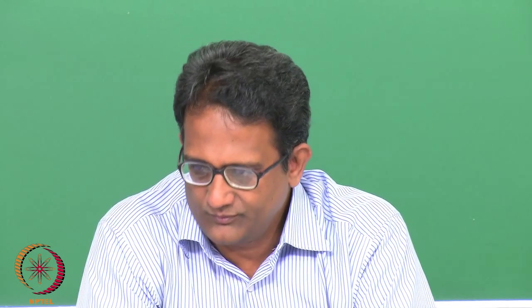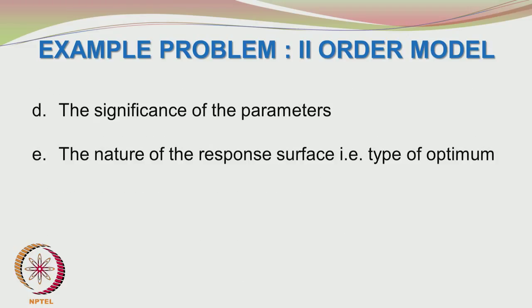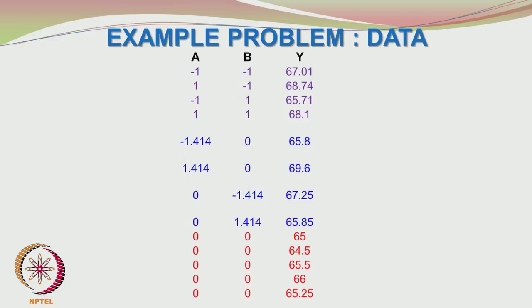Now let us look at the problem statement for the second example. We have an exploratory study conducted in a pilot plant using a CCD or central composite design strategy, and the results are obtained as shown in the following table. You are asked to find the second order model parameters, the sequential and adjusted sum of squares, the complete ANOVA table, the significance of the parameters, and the nature of the response surface. The data presents a straightforward central composite design where you have the factorial points at the beginning, followed by the axial points.